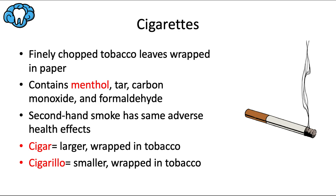Cigarettes contain finely chopped tobacco leaves wrapped in non-tobacco paper. A cigarette might contain menthol, tar, carbon monoxide, and formaldehyde, as well as a whole bunch of other chemicals, many of which are very harmful and carcinogenic. Menthol is a flavoring that masks the harsh taste of cigarette smoke, and the FDA is currently trying to ban menthol and other flavors to make cigarettes less appealing. Secondhand smoke, which refers to smoke breathed in by someone not actively smoking, has the same adverse health effects because it contains all of the same harmful chemicals like carbon monoxide and formaldehyde.